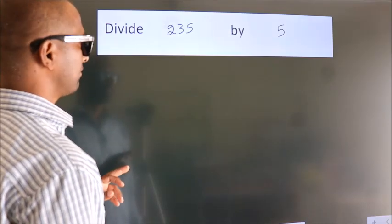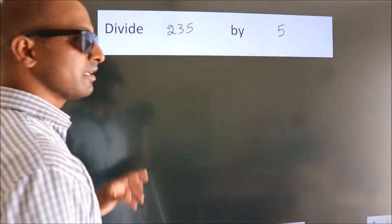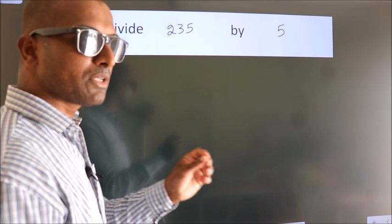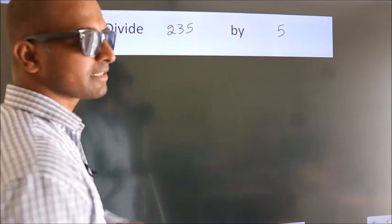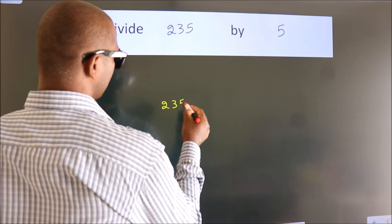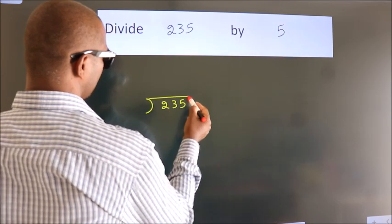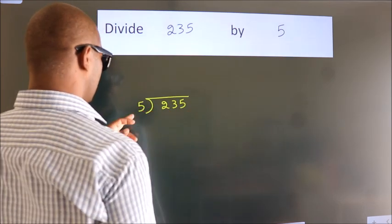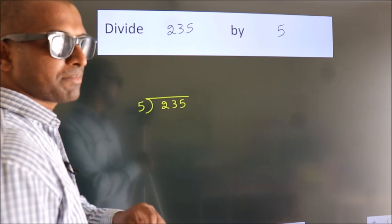Divide 235 by 5. To do this division, we should frame it in this way. 235 here, 5 here. This is your step 1.